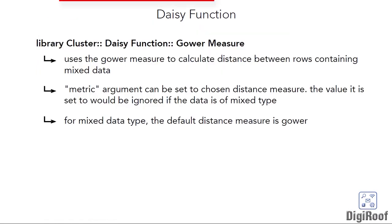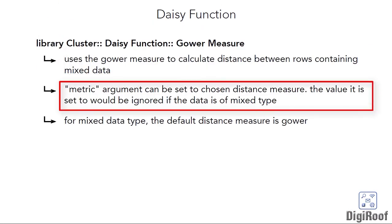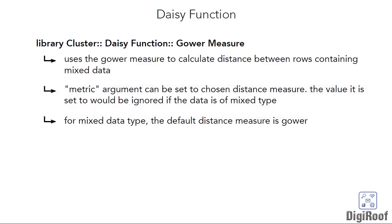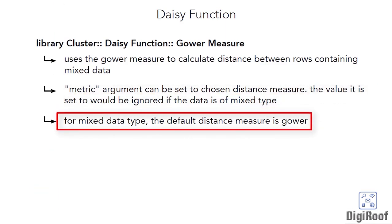One more thing: the daisy function has an argument called metric which can be set to distance measures such as Euclidean and Manhattan. Using this argument, you can tell the function to calculate distance between rows using a chosen distance measure. However, if the data is of mixed type, the distance measure would automatically become Gower and the metric argument given by you would be ignored.